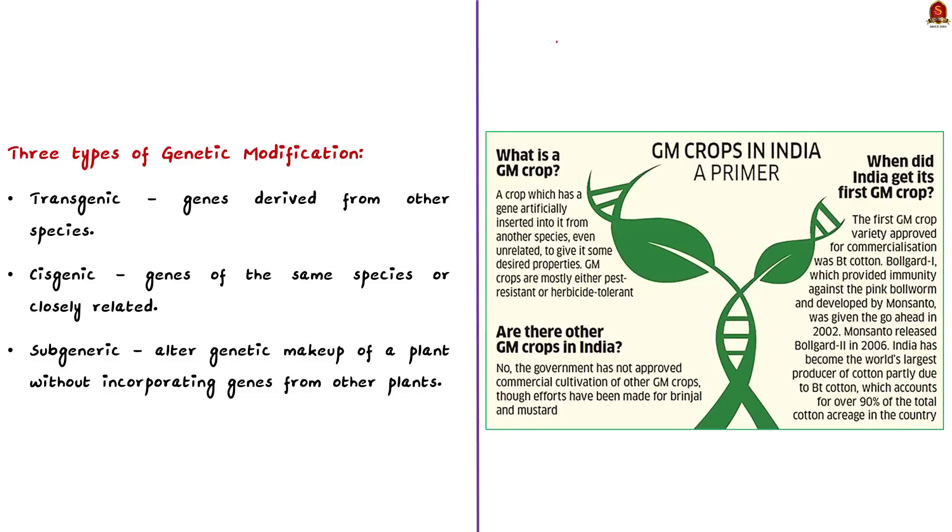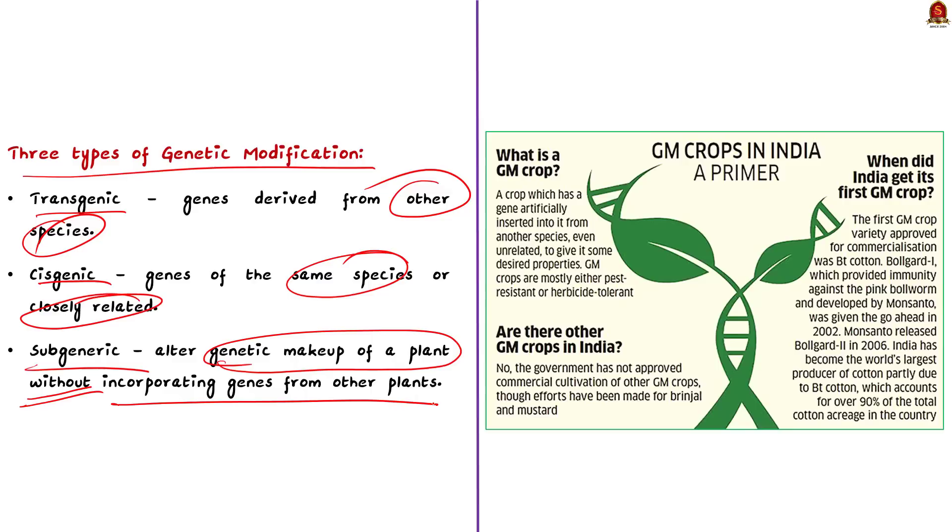There are three main types of genetic modifications which includes transgenic, cisgenic and subgenic. In transgenic method, plants have genes inserted into them that are derived from other species. In cisgenic, plants are made using genes of the same species or species that are closely related. And in subgenic, they alter genetic makeup of a plant without incorporating genes from other plants. So, the source of the genetic material used to modify their genome is the basic difference here. So, what is the purpose of genetically modified crops? See, basically genes are modified to produce plants with desired traits, which includes higher yields, enhanced nutritional value, longer shelf life, increased resistance to droughts, increased resistance to insects, pests and increased resistance to herbicides.